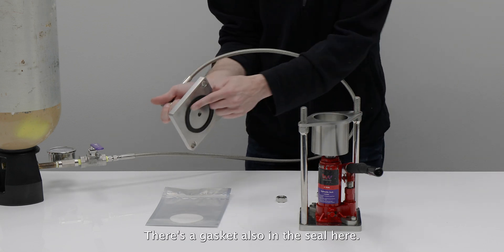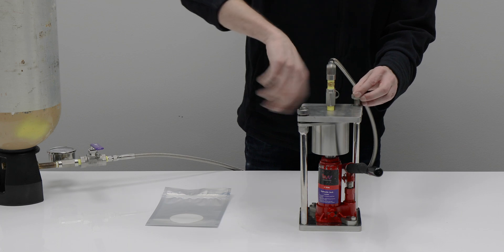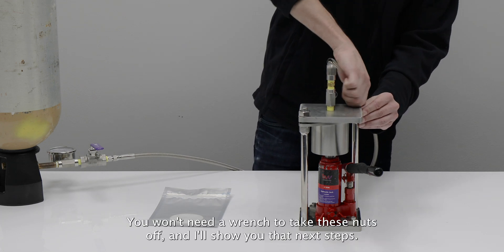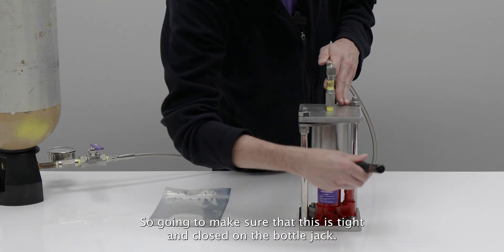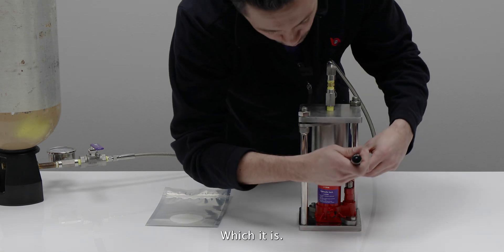There's a gasket also on this seal here. You won't need a wrench to take these nuts off and I'll show you that in the next steps. So you're going to make sure that this is tight and closed on the bottle jack, which it is.